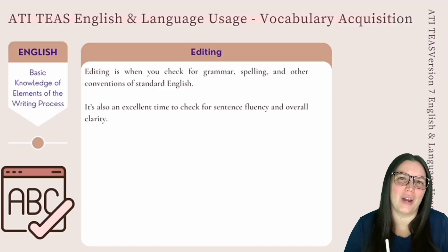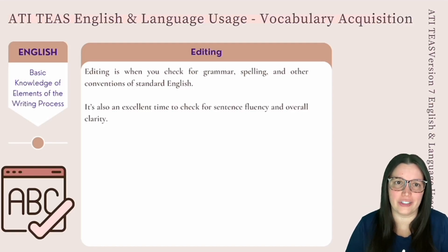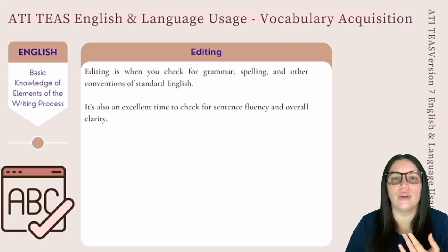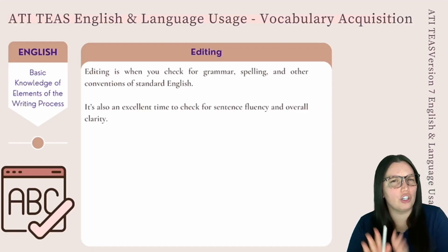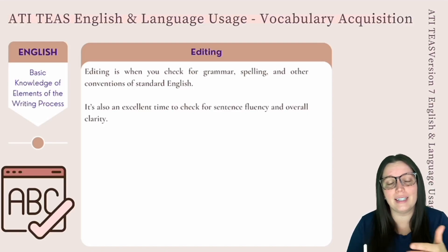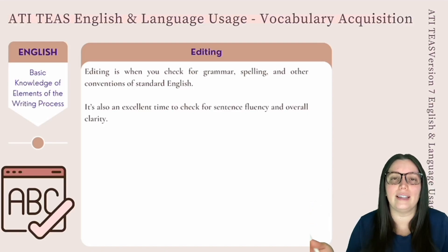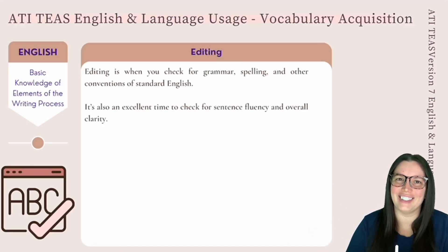The last part of the writing process is editing. After you have made all the changes in your revision stage, it's time to start editing your passage. Editing is when you check for grammar, spelling, and other conventions of standard English. It's also a good idea to check the fluency of your sentences and the overall clarity that the audience is going to perceive from your passage.